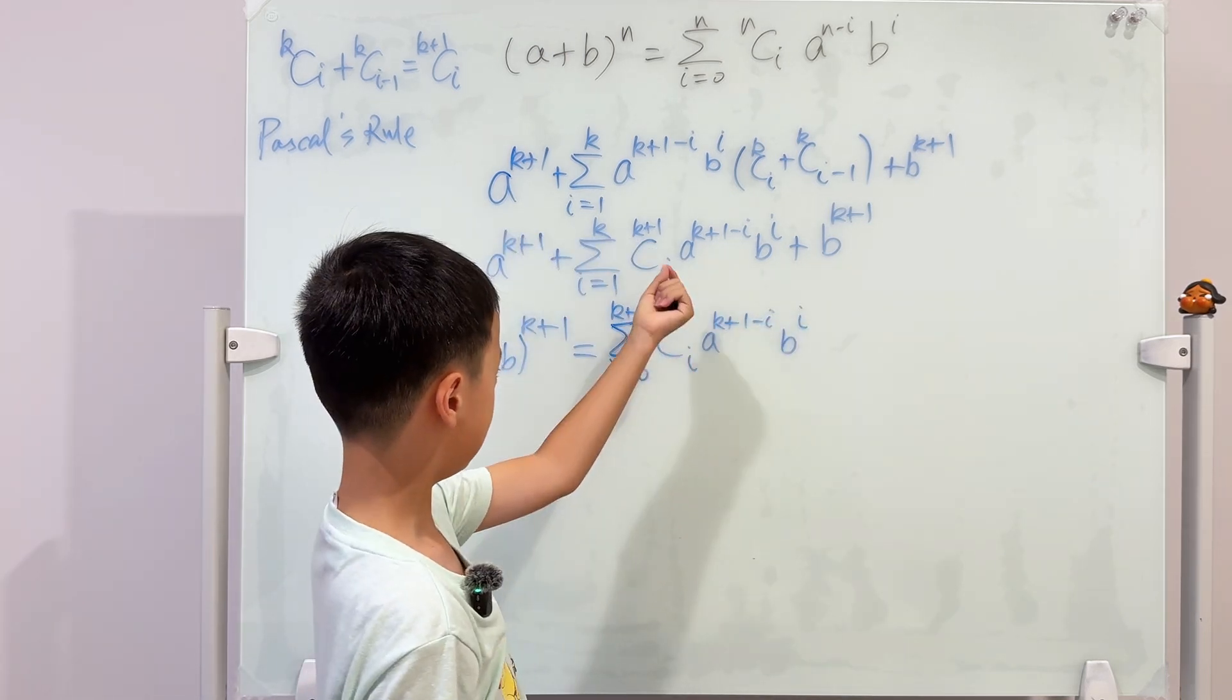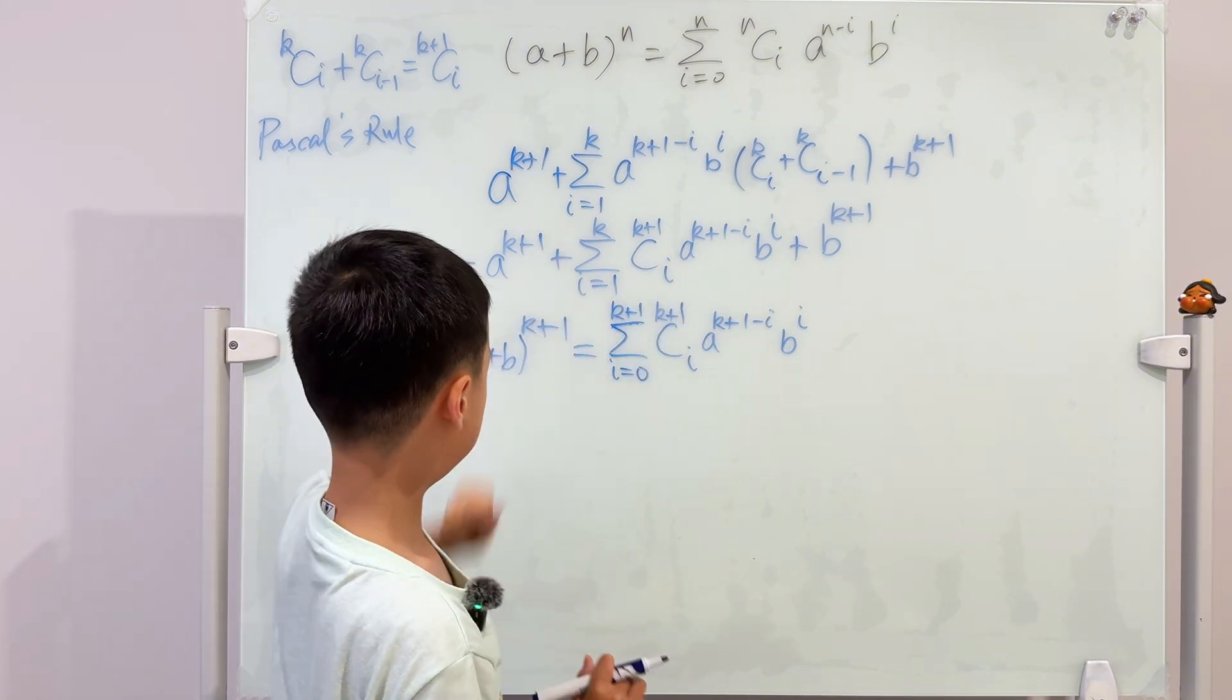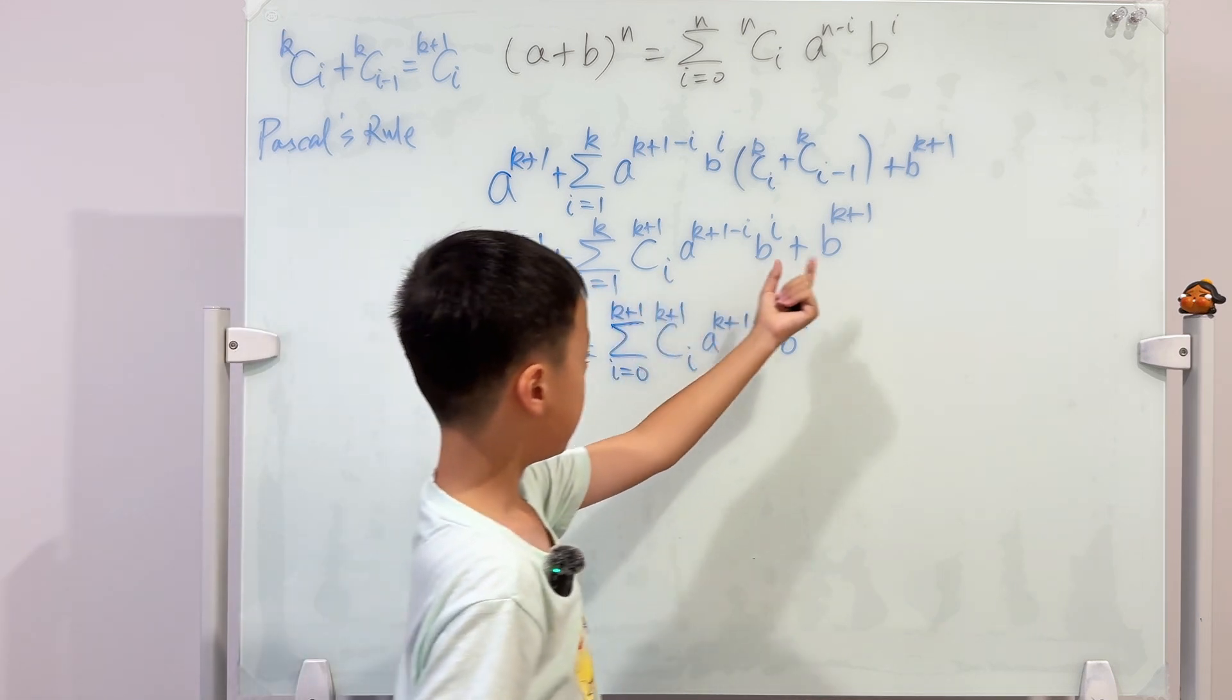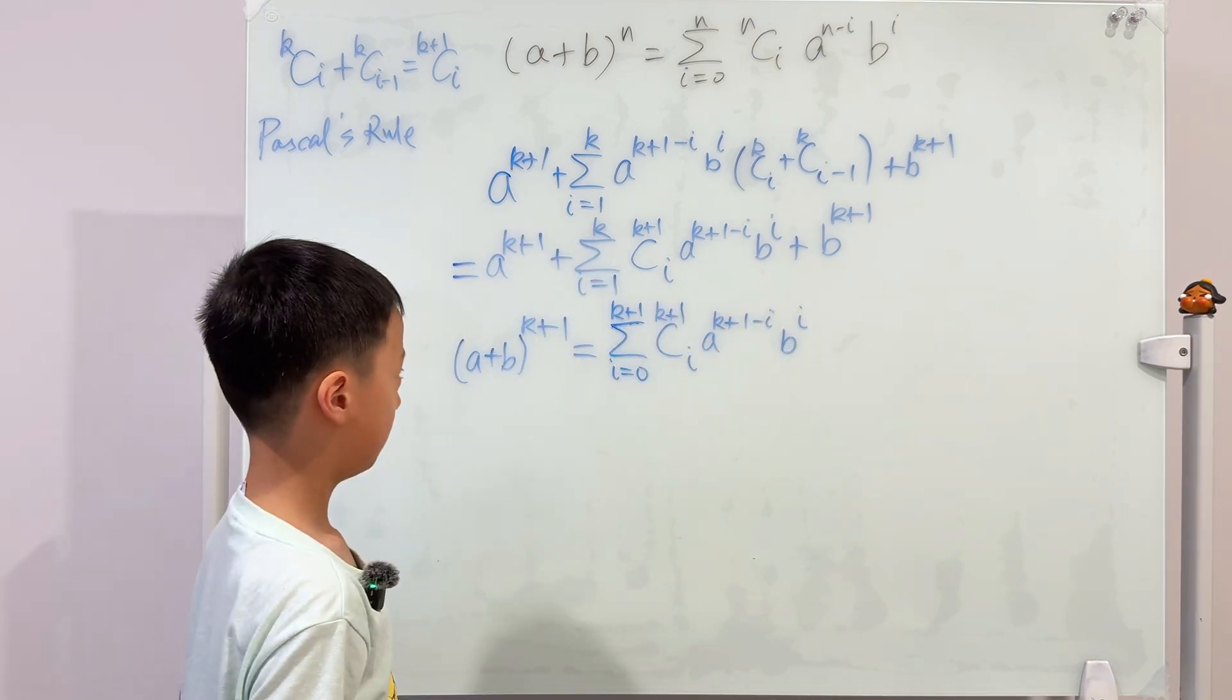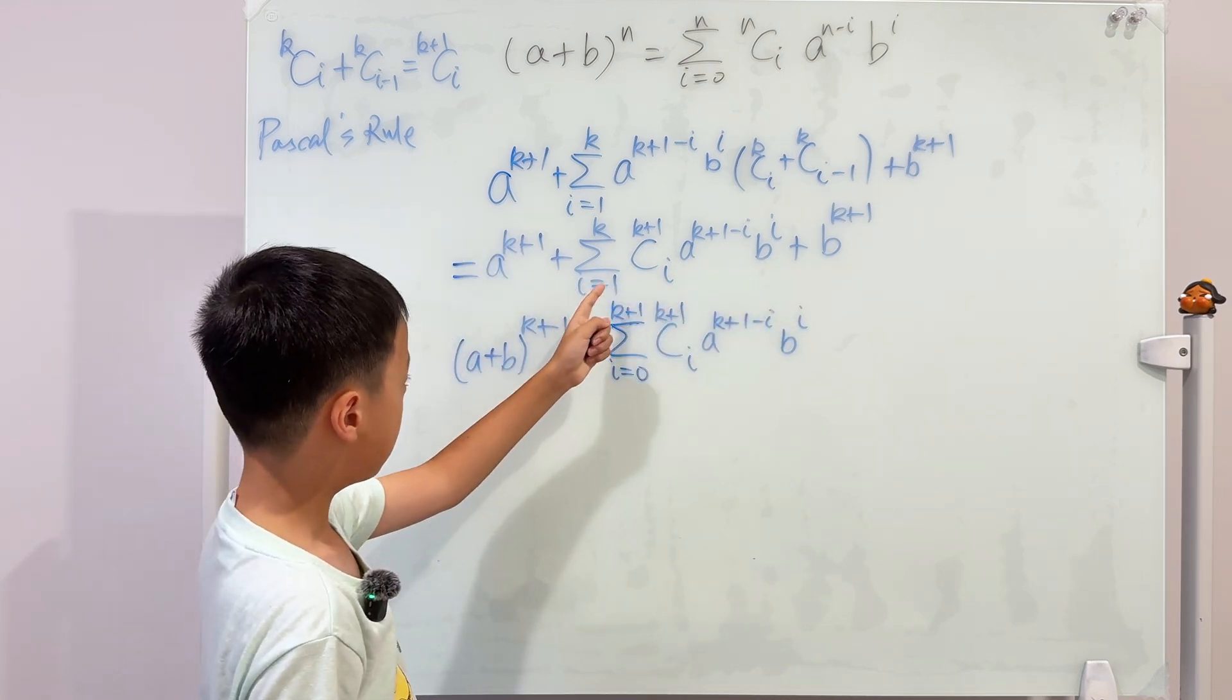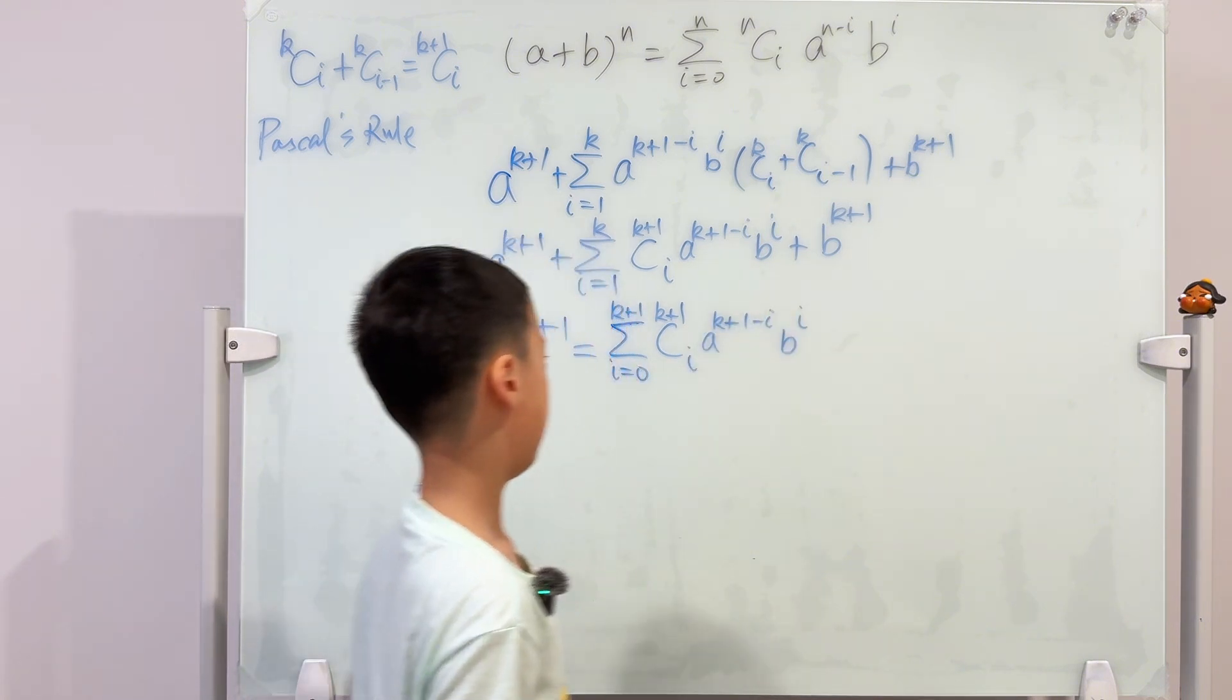You see, the input is exactly the same, but the only thing different is the sigma. Let's recall. This was when i equals zero. This was when i equals k plus one. So then why don't we put these two terms in? So then it will become i equals zero, since this is zero, to k plus one, since this is k plus one.